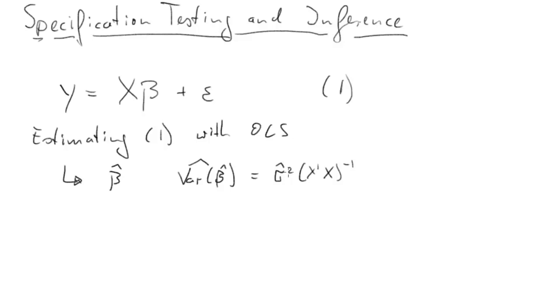So the question is now, can we perform inference on beta? Can we use, let's call this equation 2, the variance covariance matrix to perform inference on beta?